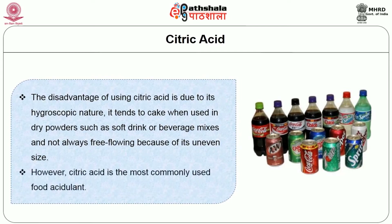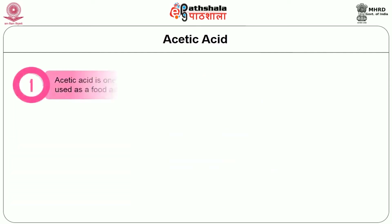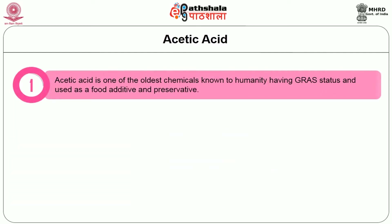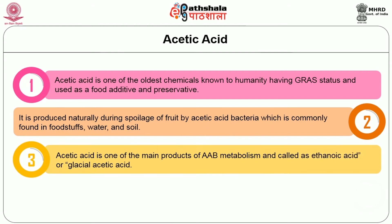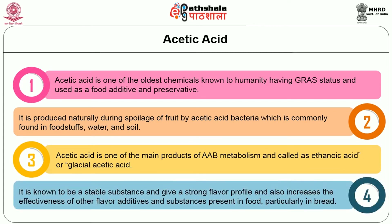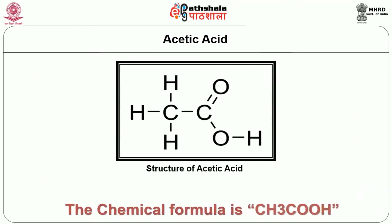Citric acid is the most commonly used food acidulant. Next is acetic acid. It is one of the oldest chemicals known to humanity, having GRAS status and used as a food additive and preservative. It is produced naturally during spoilage of fruit by acetic acid bacteria, which are commonly found in foodstuffs, water and soil. Acetic acid is one of the main products of acetic acid bacteria (AAB) metabolism and is called ethanoic acid or glacial acetic acid. It is a stable substance, gives a strong flavor profile, and increases the effectiveness of other flavor additives and substances present in food, particularly in bread.